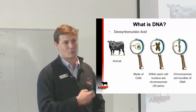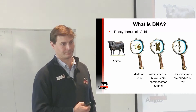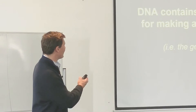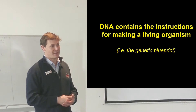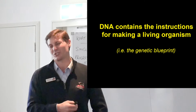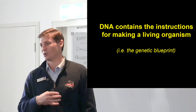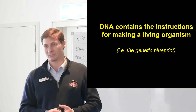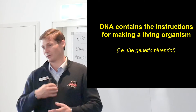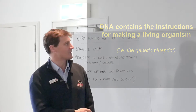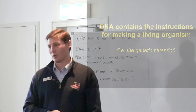Why is DNA important? What role does it play? Effectively, it contains the instructions for making that living organism or animal. Or, in more layman's terms, it's basically its genetic blueprint. It contains all its genes, and those genes determine how that animal functions — what colour eyes it's got, what colour coat it's got, whether it marbles in the right environment, and all those type of things. Basically, it contains the instructions for how that animal operates.